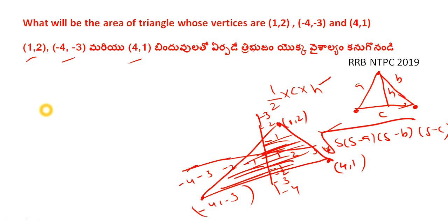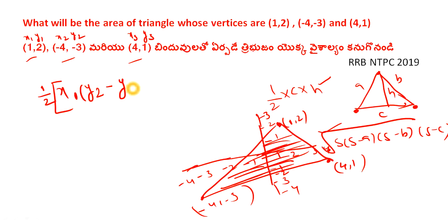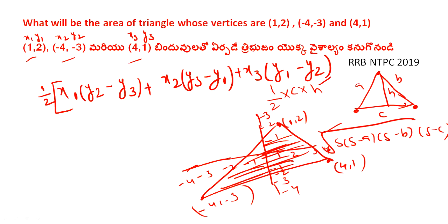We have a formula here. This is a simple formula. Suppose the three points are (x1, y1), (x2, y2), and (x3, y3). The area formula is: half times |x1(y2 − y3) + x2(y3 − y1) + x3(y1 − y2)|. This is the formula.